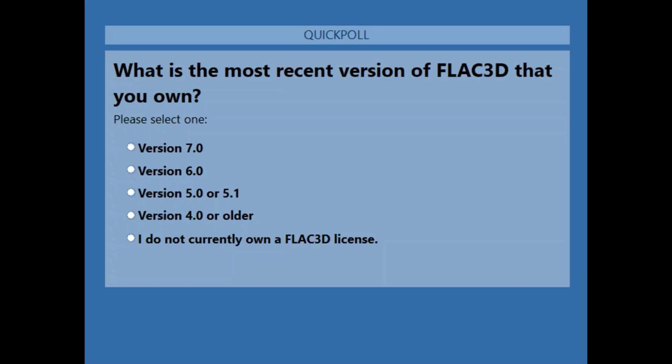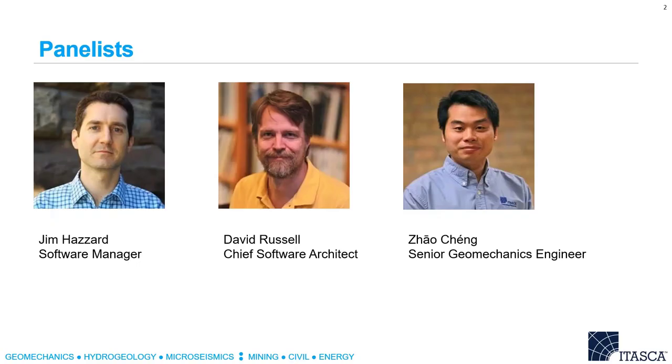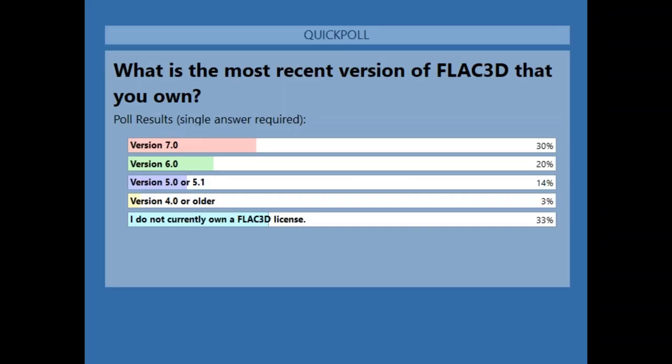So 65 percent voted — that's probably enough to get a good feeling for what people are doing. Interestingly, 30 percent are already using FLAC 3D 7, 20 percent version 6, 14 percent version 5, and 33 percent don't actually own a FLAC 3D license. Knowing that, I will try to point out things that are unique to FLAC 3D in general as well as things that are new in FLAC 3D version 7.